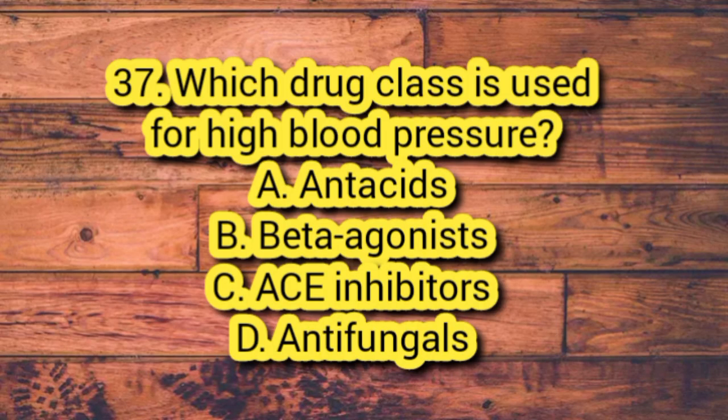Question 37. Which drug class is used for high blood pressure? A. Antacids. B. Beta agonists. C. ACE inhibitors. D. Antifungals.